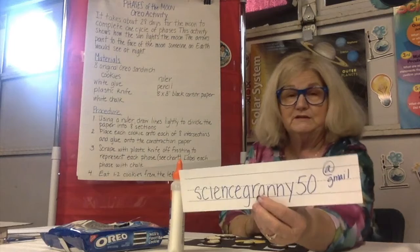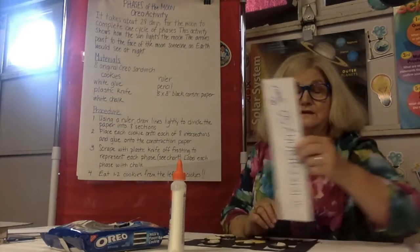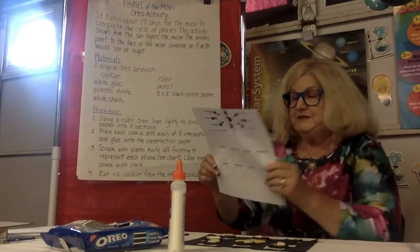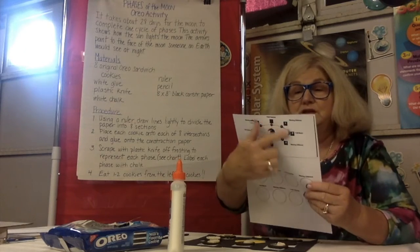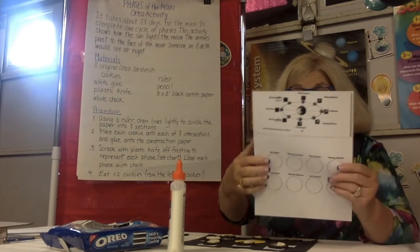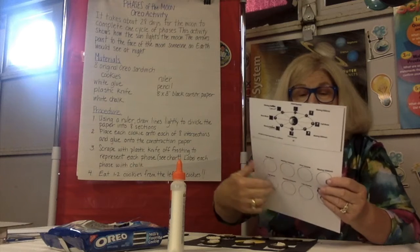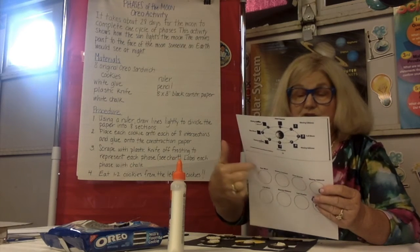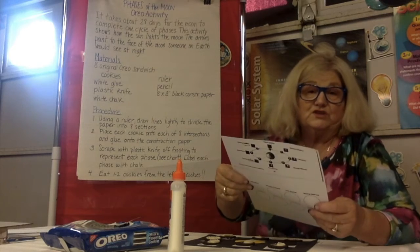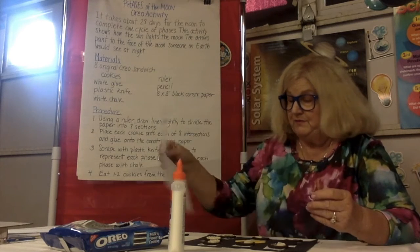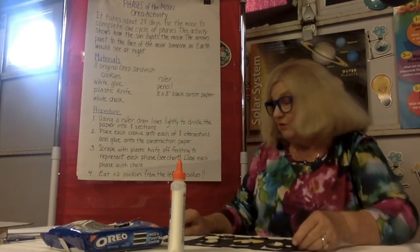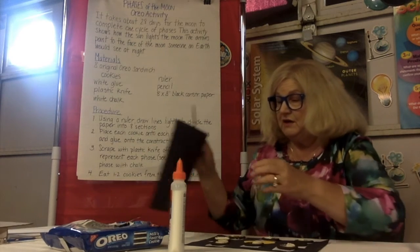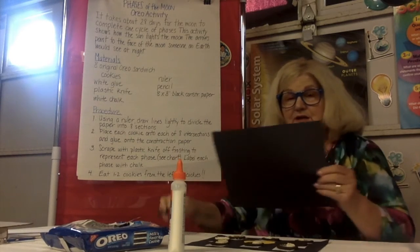You'll also need the paper that comes in the packet. If you don't have the packet, you can request one by emailing sciencegranny50 at Gmail. This piece of paper shows the phases of the moon and gives you cutouts. You can also use white chalk to write which phase it is on the black paper. Once you've cut those out and placed them on your black paper, you're ready.